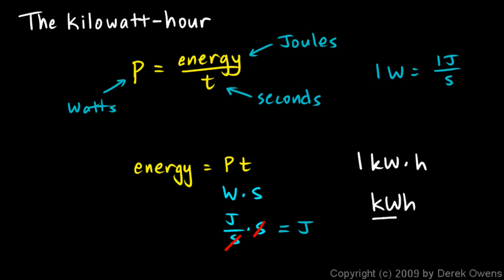And remember what the kilowatt is. That's a unit for power. That tells you how fast you're using the energy. And then the hour is a unit of time. So if you're using energy at this rate, one kilowatt for that much time, one hour, then the total amount of energy used is one kilowatt hour.